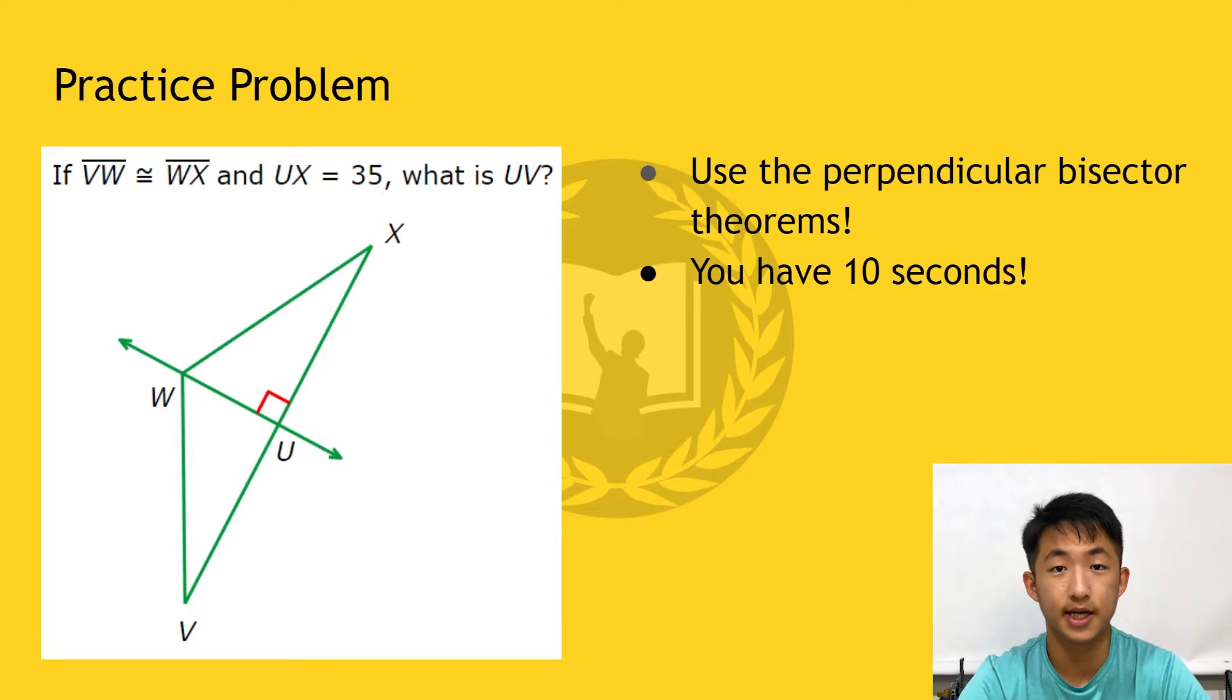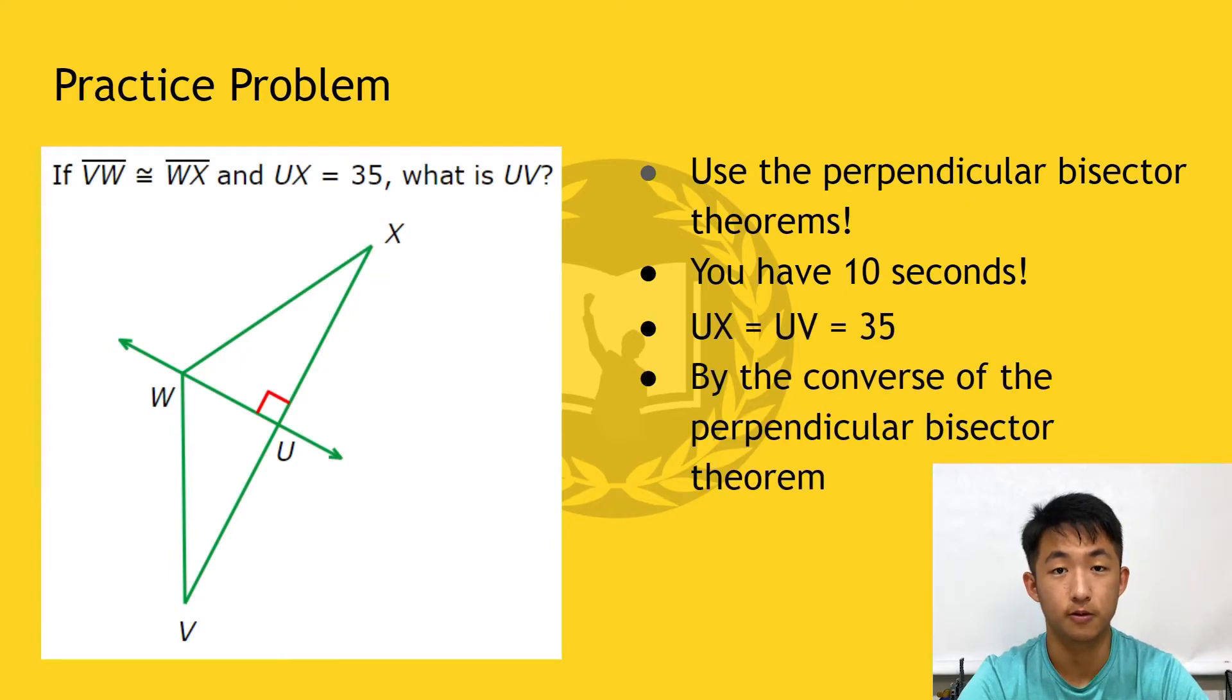Okay, now that 10 seconds has passed by, let's take a look at the solution. By the converse of the perpendicular bisector theorem, the length of UX must equal the length of UV. This is because VW is congruent to WX, which means that W must be on the perpendicular bisector of segment VX. Hence, this makes U the midpoint of segment VX, and therefore UX equals UV, which is also 35.